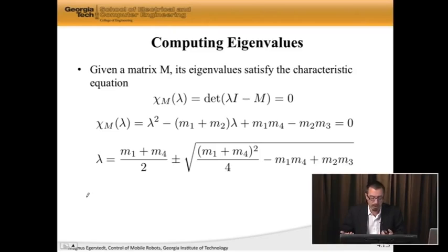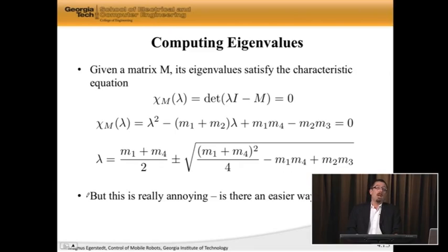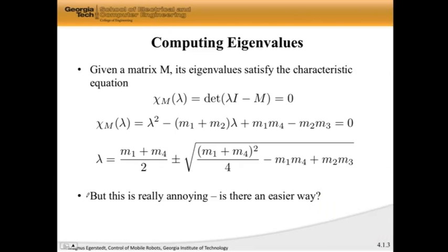In this case, it turns out that lambda is this rather annoying looking expression here. But this is what the two eigenvalues to this 2 by 2 matrix would be. But it is annoying. I really don't want to do this. So the question is, is there an easier way of making the eigenvalues be what we would like them to be?